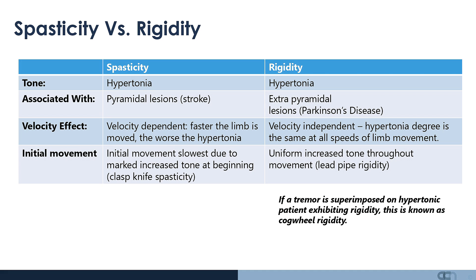In spasticity, the initial movement is the slowest due to a more marked increase in tone at the beginning of movement — sometimes referred to as clasp knife spasticity. Whereas in rigidity, there is uniform increased tone throughout movement, sometimes referred to as lead pipe rigidity. If a patient exhibits rigidity and there is a superimposition of a tremor, this is known as cogwheel rigidity.